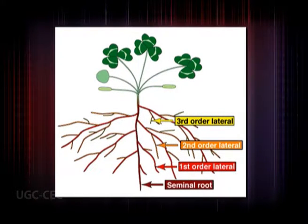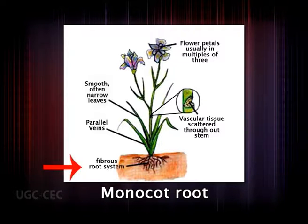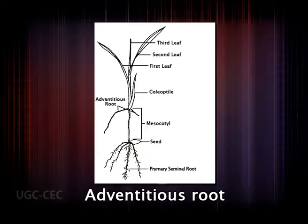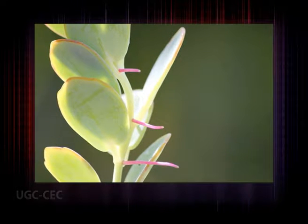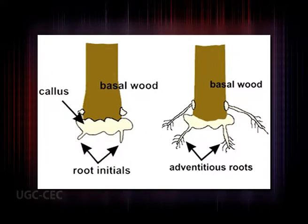Most dicotyledons and gymnosperms possess a root system based on the tap root and its branches. The tap root produces lateral or branch roots in an acropetal sequence; the tap root is called the primary root, branches of first order are secondary roots, and branches of second order are tertiary roots. The root systems of monocotyledons are commonly composed of adventitious roots, which originate from stems, branches, leaves, old woody roots, rhizomes, or from the callus of cuttings.